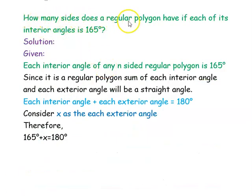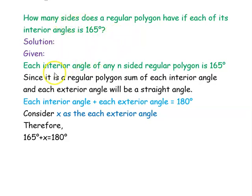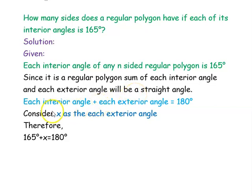How many sides does a regular polygon have if each of its interior angles is 165 degrees? We want to find the number of sides. We take the number of sides as n. So, the n-sided regular polygon has each interior angle of 165 degrees. Since it is a regular polygon, each interior angle plus each exterior angle equals a straight angle, that is 180 degrees.